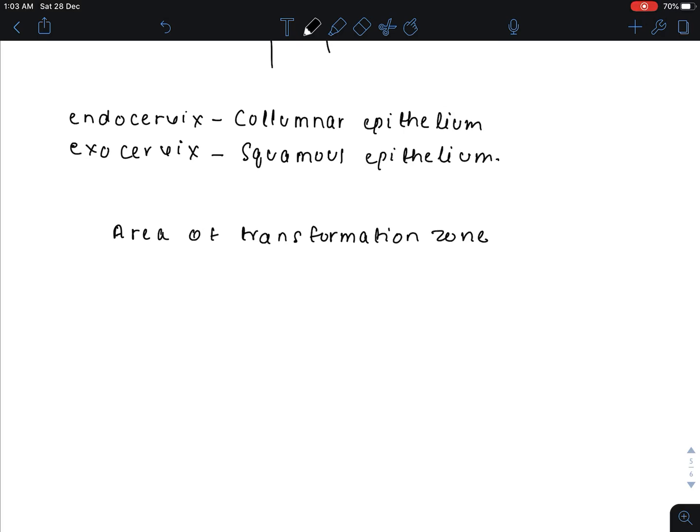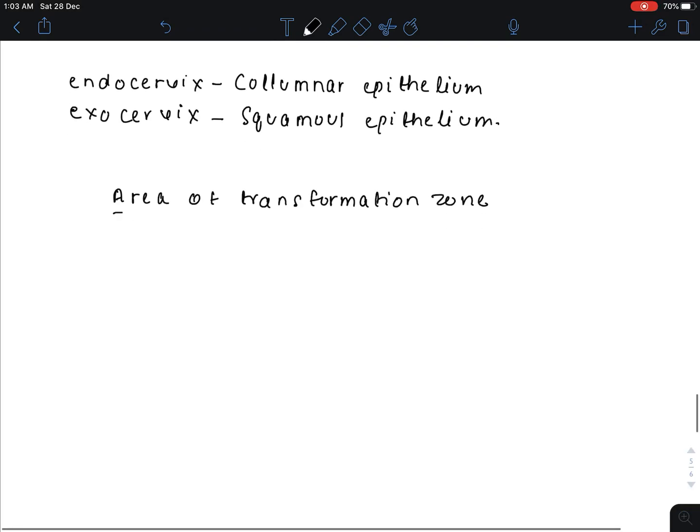In the transformation zone you will get squamous cells and columnar cells, so this is also known as squamous columnar junction. This transformation zone is the most common site for squamous metaplasia.